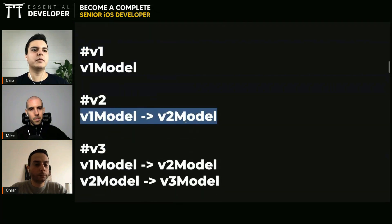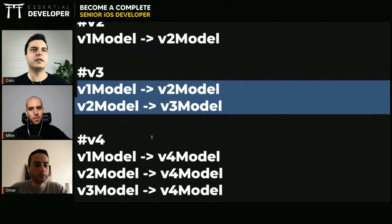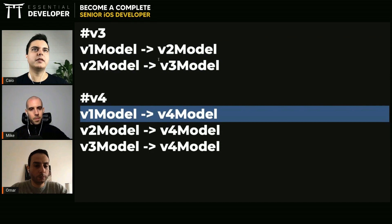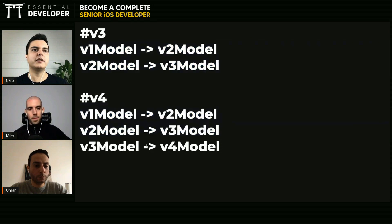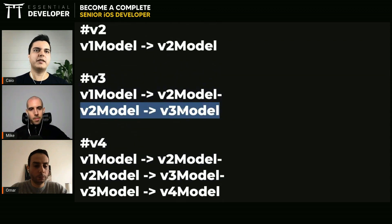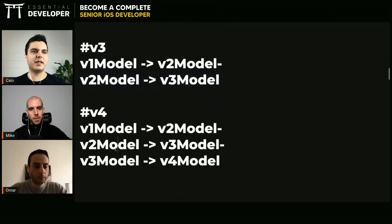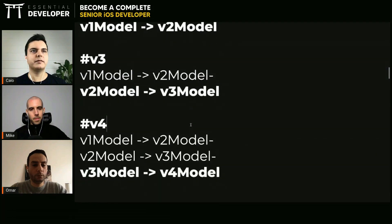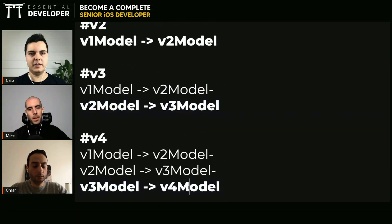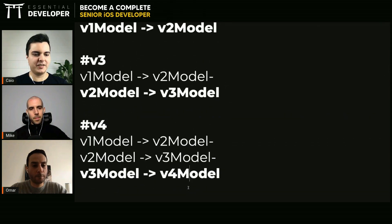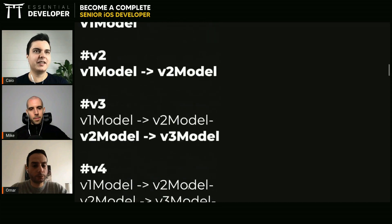In the progressive approach, you reuse the old models you already have and migrate the data through each step. So you only write the migration from the previous version to the latest, and reuse the others. This will be reused from previous models, this will be reused from previous models — so you only need to create the new one. That's a performance tradeoff, but it's easier to manage. It's not easier to develop because you need to write the logic that loads the first model and progressively migrates.